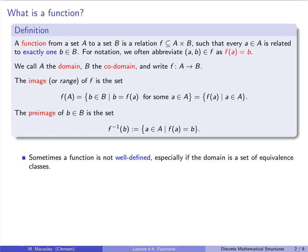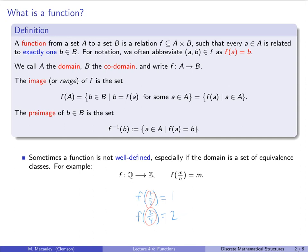Sometimes a function is not well-defined. That's a tricky concept and I'm not going to define it formally because it depends on the setting. This happens especially if the domain is a set of equivalence classes. For example, if I try to define F from the rational numbers to the integers, where F(m/n) = m (the numerator), that's not going to be well-defined because F(1/2) = 1 and F(2/4) = 2. Those are really the same number but given our definition they're mapped to different things.